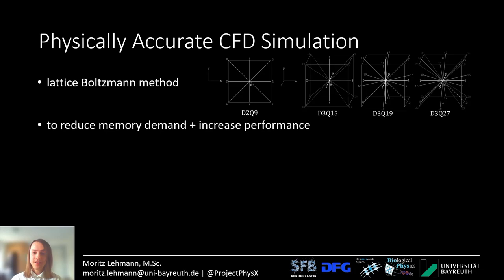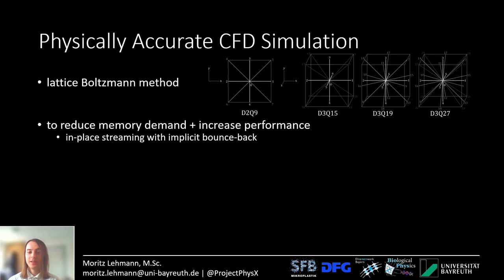The Lattice Boltzmann method is known to have very high memory demand, while on GPUs memory is very limited. To address this I used two tricks. The first is in-place streaming, which approximately halves the memory consumption and even increases performance a bit because of so-called implicit bounce-back boundaries.